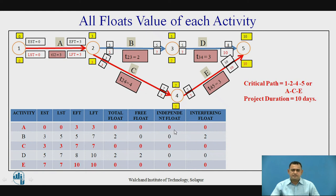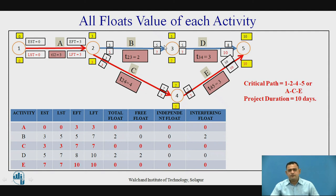For activity B, which is non-critical: total float = LFT minus EFT = 5 minus 3 = 2, meaning the activity can be delayed by a maximum of 2 days without affecting overall project duration. Free float: EST of succeeding activity D is 5, minus EFT of B which is 5, giving 5 minus 5 = 0. The independent float is also 0. But the interfering float = total float minus free float = 2 minus 0 = 2.